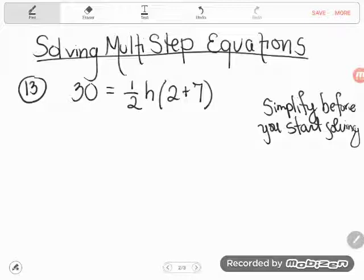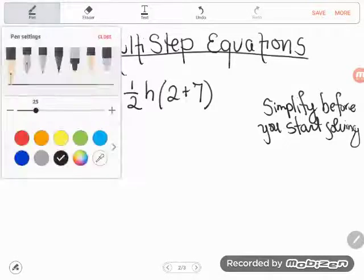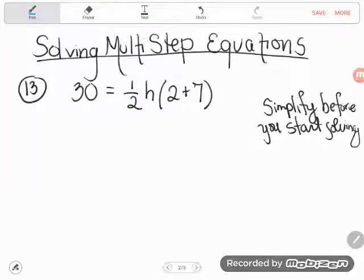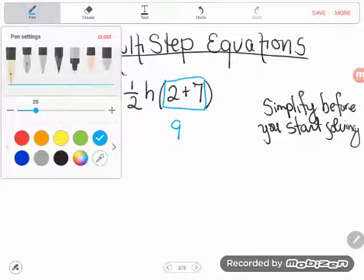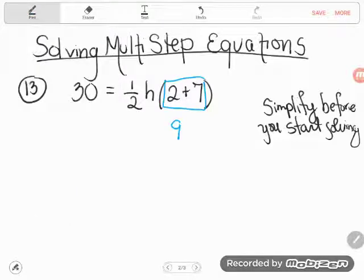Okay, so I see some math that I know how to do. I see 2 plus 7 is something I totally know how to do. So 2 plus 7 is 9. And now I'm going to drop everything from above that I haven't dealt with yet. I haven't dealt with the 30, the equals, the half, or the H.